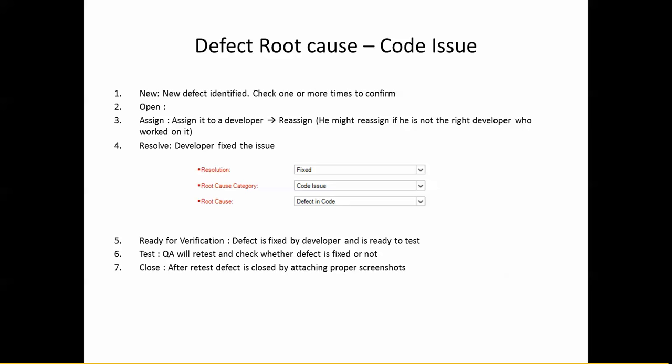The first root cause is a code issue — the straightforward path. Step one: you find unusual behavior and open a new defect. Step two: you assign it to a developer. Reassignment can happen within developers — for example, you might assign it to a UI developer but the issue is actually in a stored procedure, so he'll reassign it to the backend developer concerned.